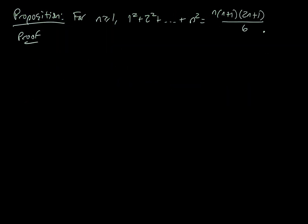Let's look at my proposition: for n greater than or equal to 1, we have 1 squared plus 2 squared up to n squared equals n times n plus 1 times 2n plus 1 over 6. We're going to prove this by induction. These early induction proofs are very formulaic. We will proceed by induction — a big part of proof writing is not just getting the math right but communicating it well, and stating our strategy lets the reader know what we're applying.